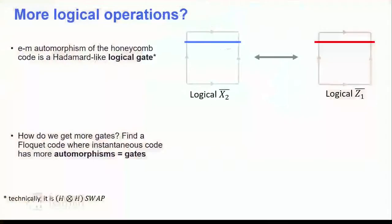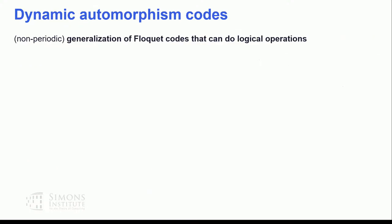For a Toric code on a torus, the EM automorphism corresponds to exchanging the logical X with a different logical Z string — that is a Hadamard-times-SWAP gate. This brings us to the definition of dynamic automorphism codes: Floquet codes whose condensation graphs can implement various automorphisms and use those for quantum computation.